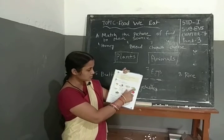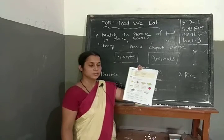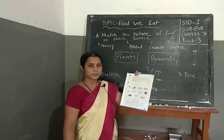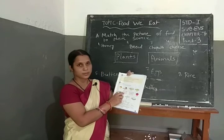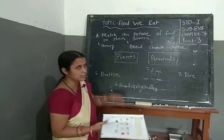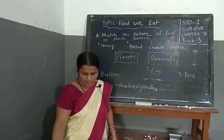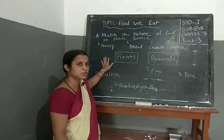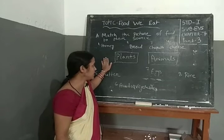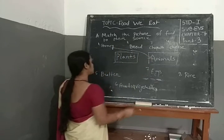Some pictures are given here in your book. Match the pictures of food to their sources. Some foods come from plants and some foods come from animals. Tell me students, honey — is honey a plant product or animal product? We get honey from honeybees, so this is an animal product. Match with animal.